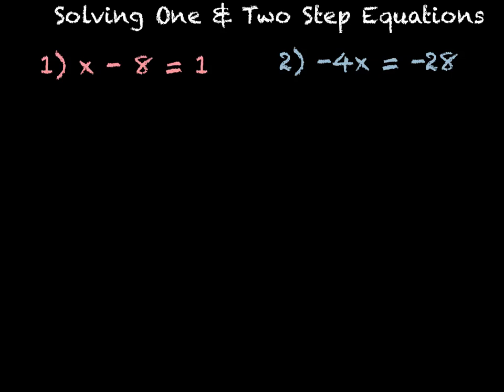For this first one, we have x minus 8 equals 1. The opposite of minus 8 is plus 8, so add 8 to both sides of the equal sign. That cancels out, leaving x equals 1 plus 8, which is 9. That's your final answer.